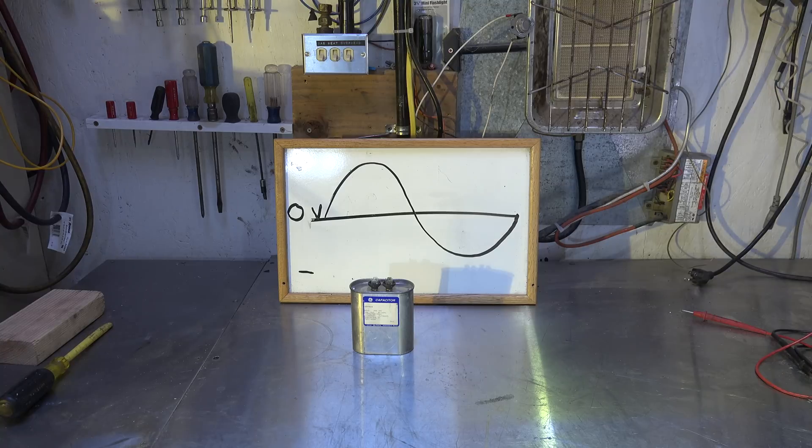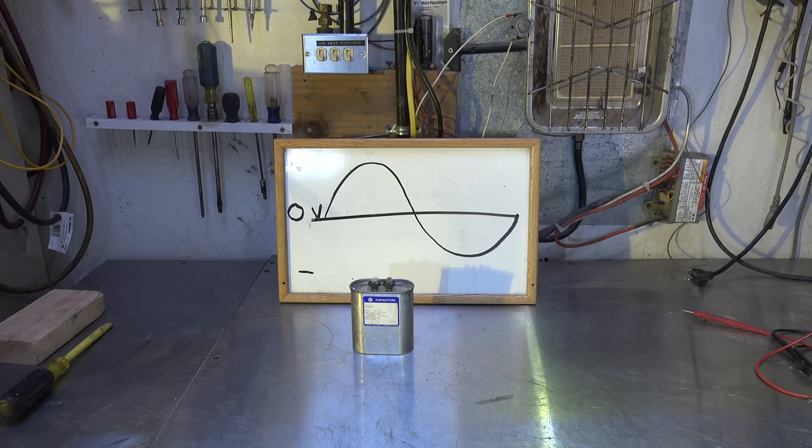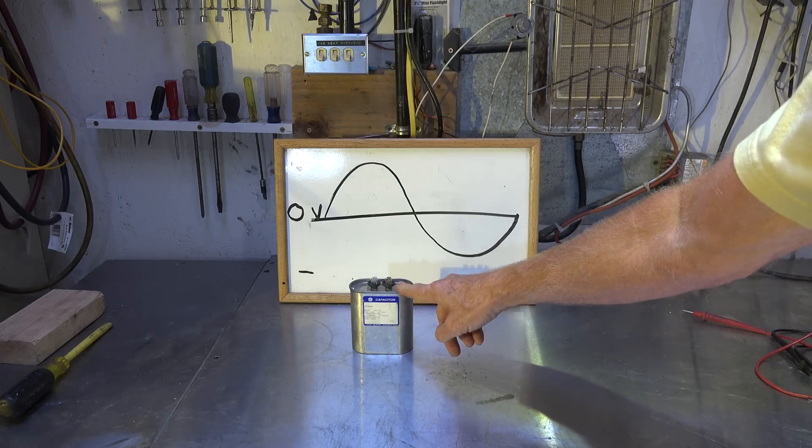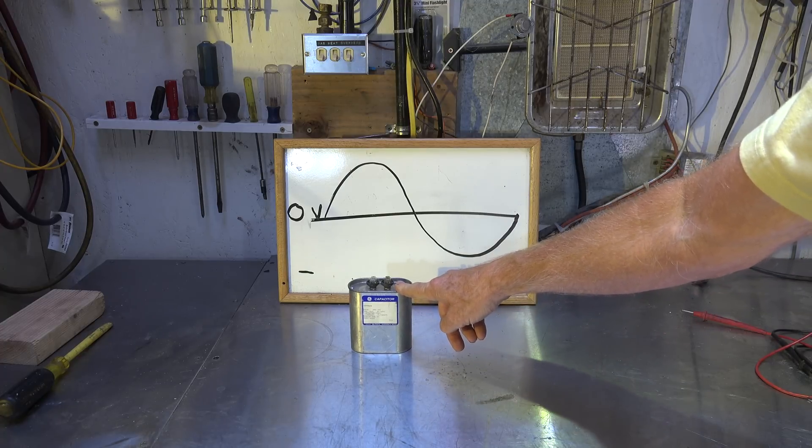Now I did a video on a PSC motor where I removed the capacitor and just put power straight to the run winding. Motor starts fine, but it overdraws - it draws too much power because there's too much power going to the start winding. That capacitor is what is limiting the amount of power that's going to the start winding.